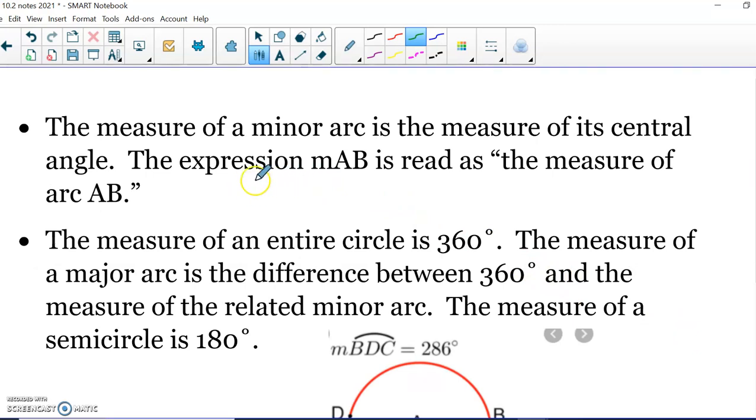When you're talking about the measure of an arc, we put a little m in front of it, like this. So you would read that the measure of arc AB. And arcs are measured in degrees. And so the measure of an arc is equal to its central angle.